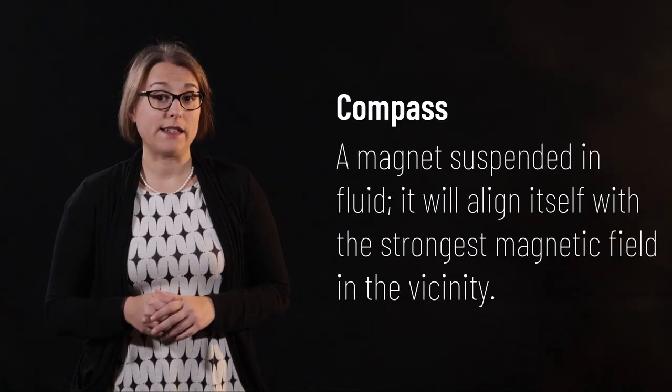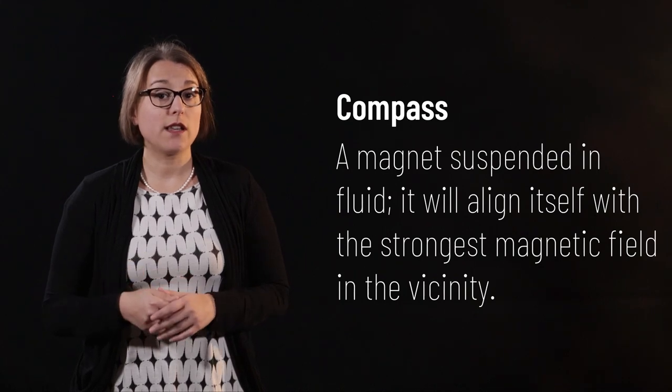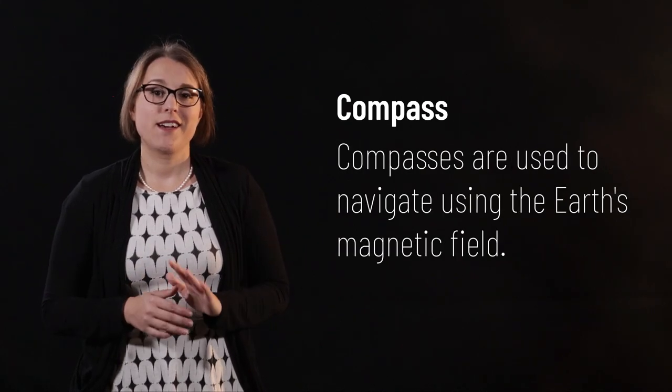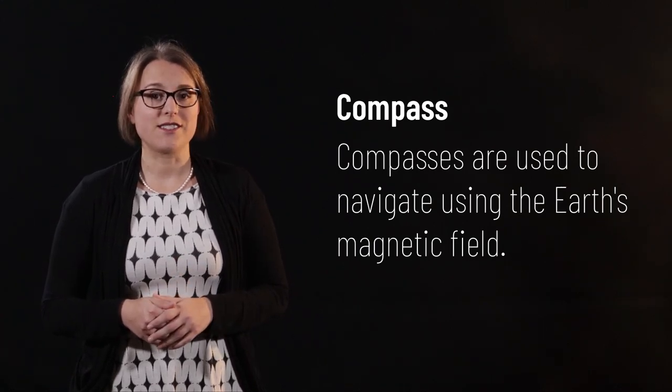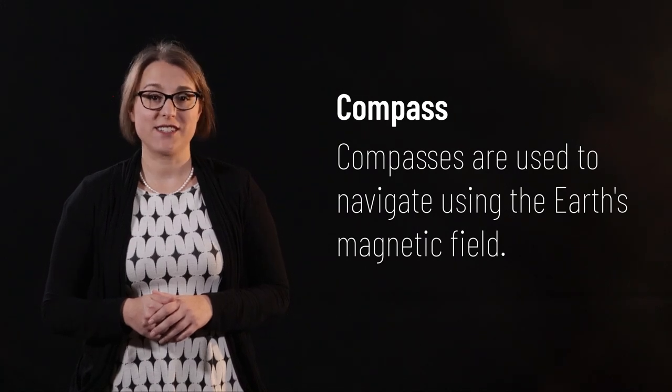A compass is a magnet suspended in a fluid. The magnet is free to rotate and will align itself with the strongest magnetic field in the vicinity. Compasses are used to navigate, as the Earth has a magnetic field. We'll talk about the Earth's magnetic field at the end of this lecture video.